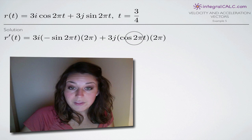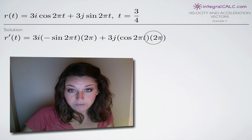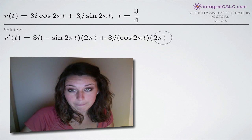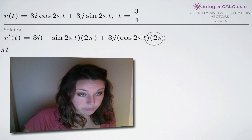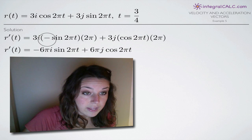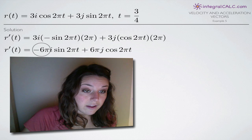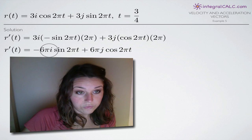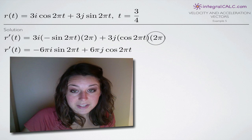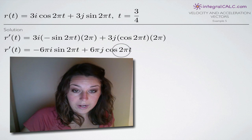The derivative of sine is cosine, so we have cosine of 2 pi t, then multiply by the derivative of the inside function 2 pi t, which is 2 pi. When we simplify, we have 3 times 2 with a negative 1, giving us negative 6 pi i as a coefficient on sine of 2 pi t. For the second term, 3 times 2 gives us 6, so we have 6 pi j times cosine of 2 pi t. So our simplified first derivative is negative 6 pi i sine of 2 pi t plus 6 pi j cosine of 2 pi t.